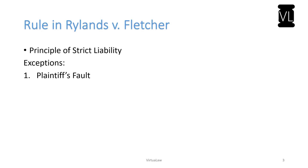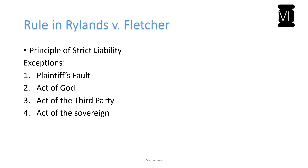There are five exceptions to strict liability. Firstly, the plaintiff's own fault — if the damage is due to the plaintiff's fault, the defendant cannot be held liable. Secondly, an act of God. Thirdly, an act of a third party. Fourthly, an act of the sovereign — meaning the government or any government authority. And fifthly, if the activity is carried out with the consent of the plaintiff.